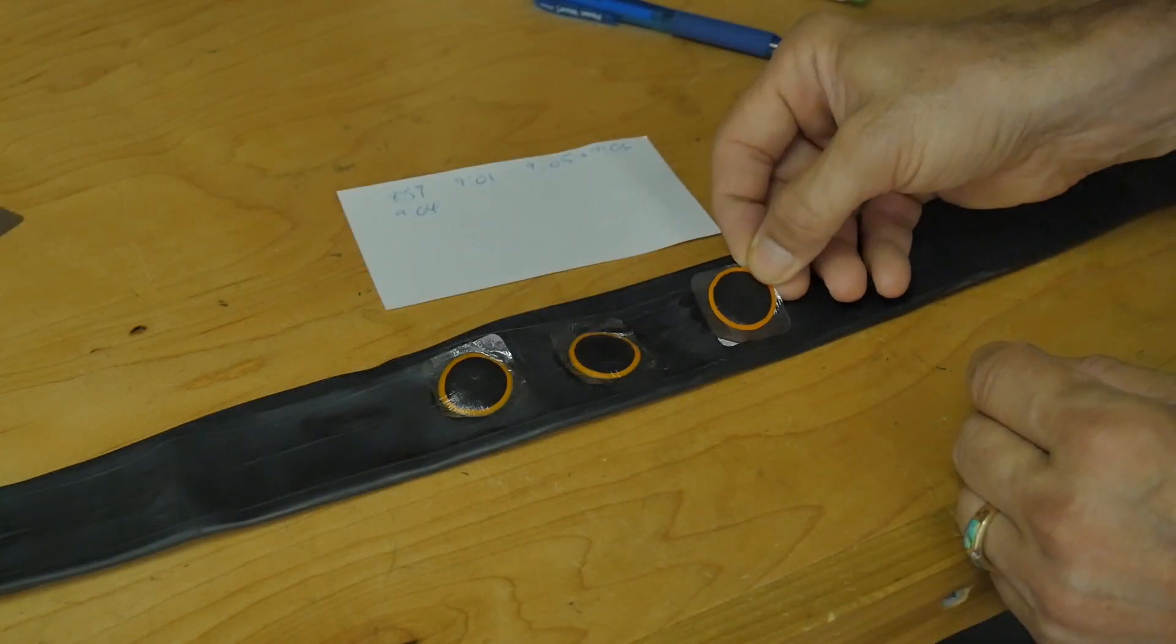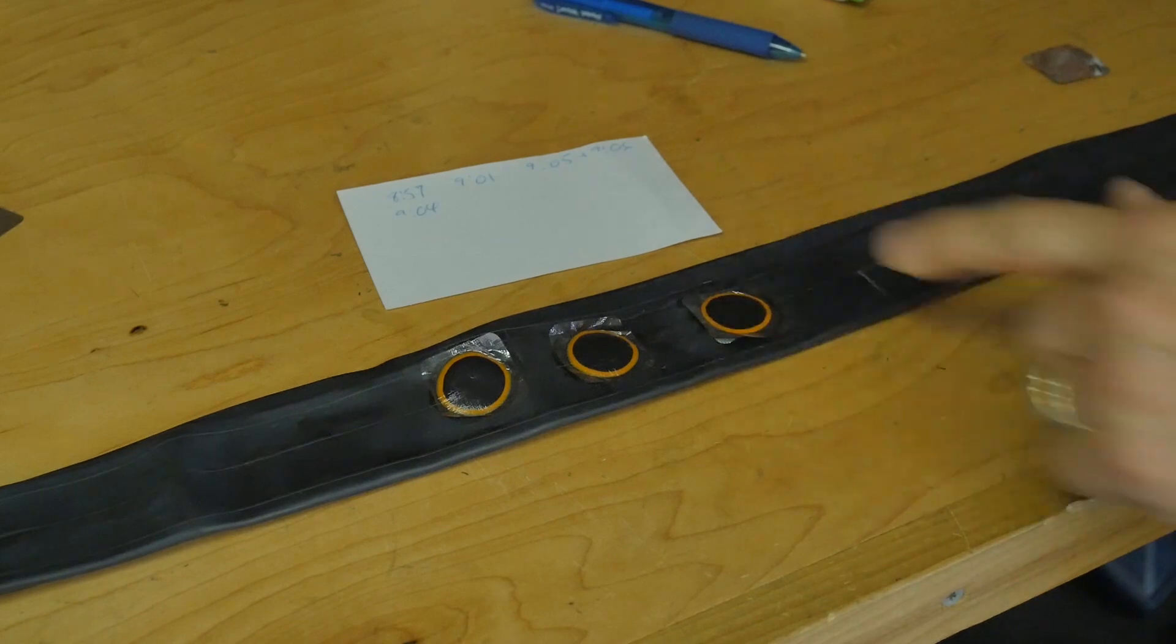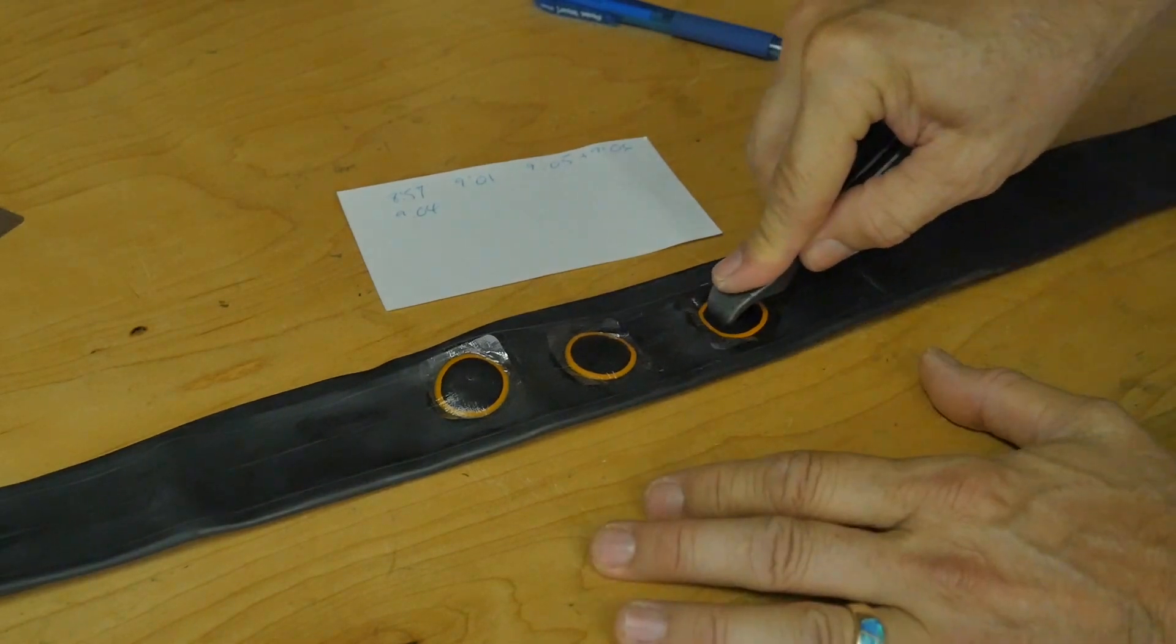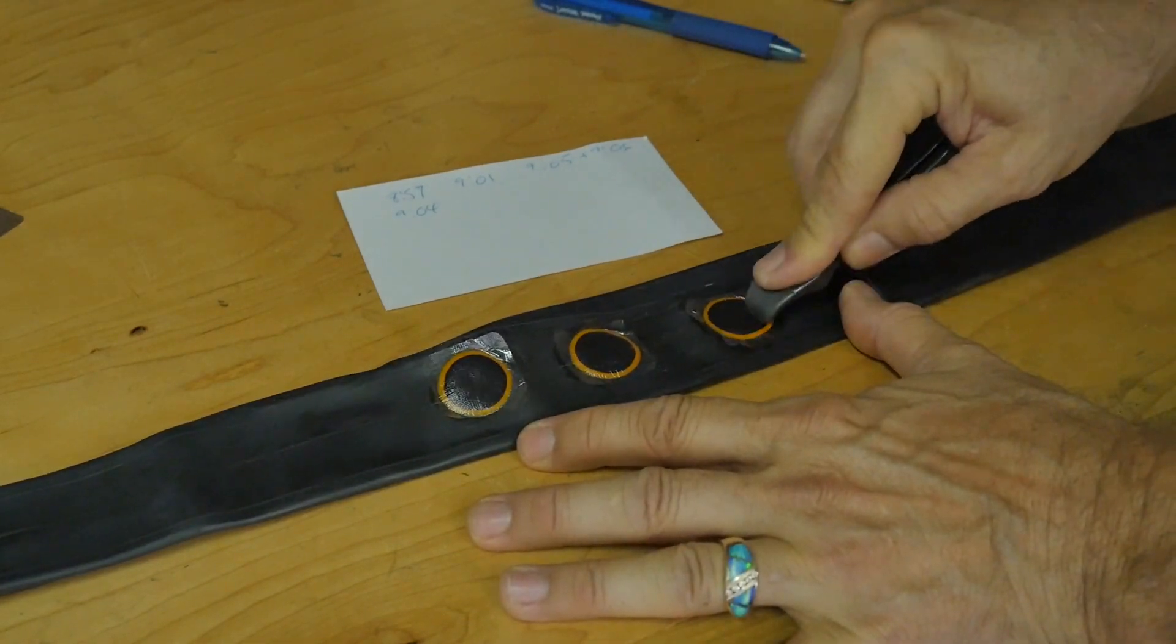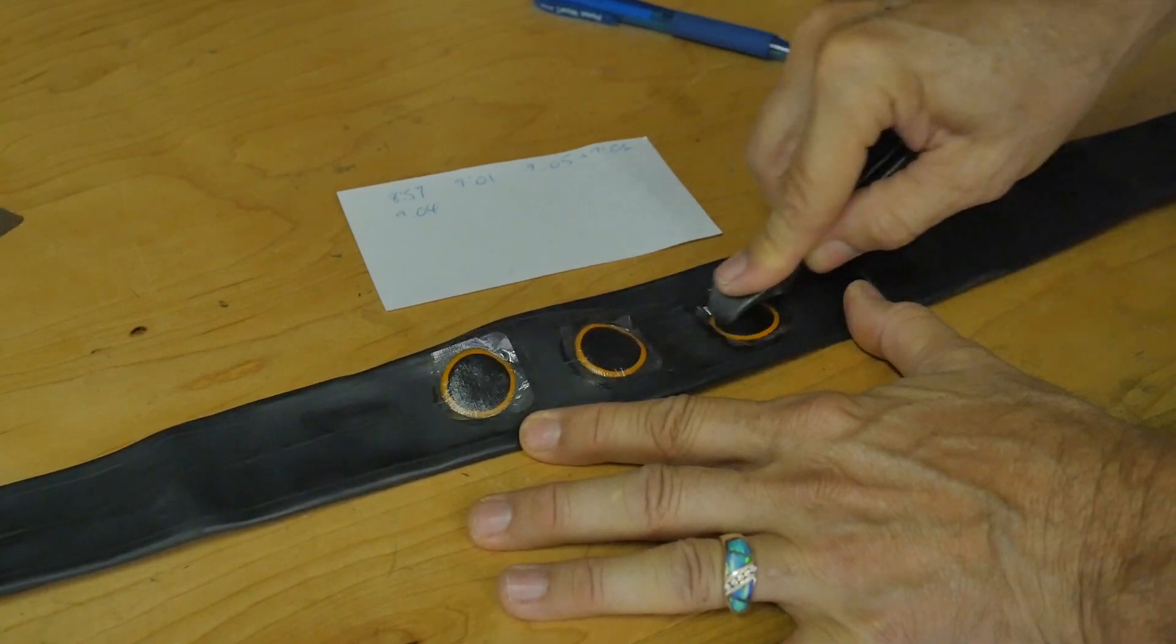And finally, I apply the third patch. Once again, I use a tire lever to firmly press all areas of the patch to help ensure that there's a good seal.